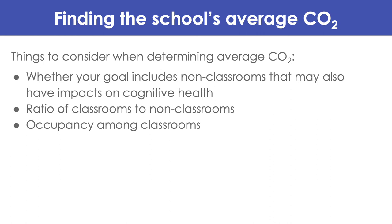You can consider the ratio of classrooms to non-classrooms to determine how many classrooms to measure before measuring a non-classroom, based on how many of each there are. You can also consider the occupancy among classrooms before sampling for your average CO2. Note that these sampling strategies exclude transient spaces like lobbies, corridors, and restrooms, as they're unlikely to have CO2 issues and have relatively little impact on productivity.